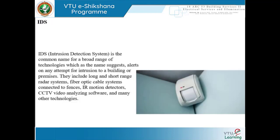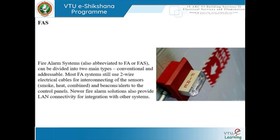IDS — Intrusion Detection System — is a common name for a broad range of technologies that alert on any attempt for intrusion to a building or premises. They include long and short range radar systems, fiber optic cable systems connected to fences, infrared motion detectors, CCTV video analyzing software, and many other technologies. Radar systems detect any movement that is intruding; CCTV video analysis detects movement and sends information accordingly so that intrusion can be detected and prevented.